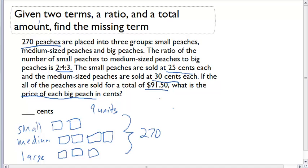And we know that we sold 270. How much is each unit worth? We can simply divide. We know that each unit has to be worth 30 peaches. Let's go back now and figure out. Well, that means for small, we had to have sold 60.